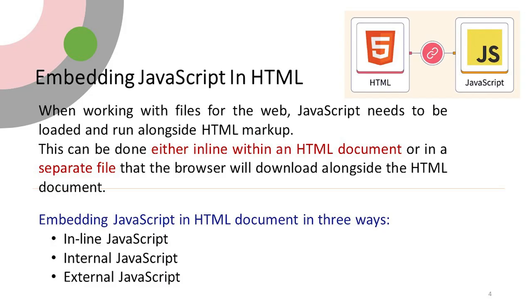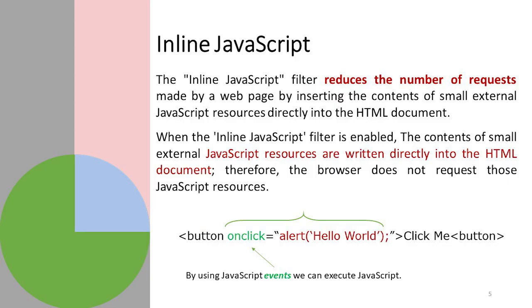When working with files for the web, JavaScript needs to be loaded and run alongside HTML markup. This can be done either inline within an HTML document or in a separate file that the browser will download alongside the HTML document. There are three ways to embed JavaScript in HTML: first is inline, second is internal, and third is external. Let's start with inline.